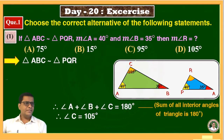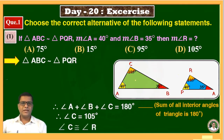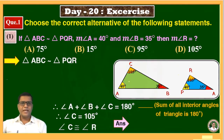We know that angle C is congruent to angle R, as corresponding angles of a similar triangle. Therefore, angle C is congruent to angle R, so the measure of angle R is 105 degrees. Therefore, the answer is option D.